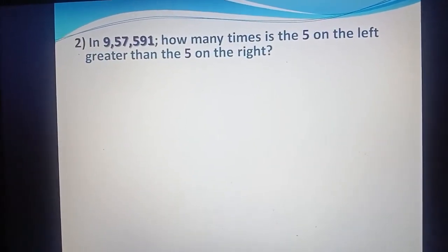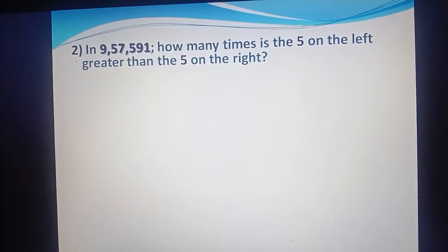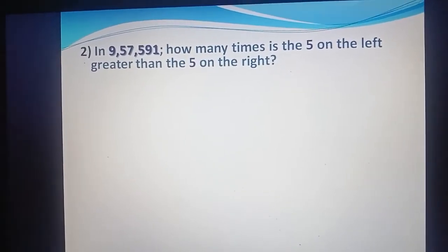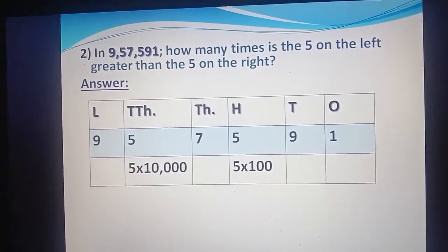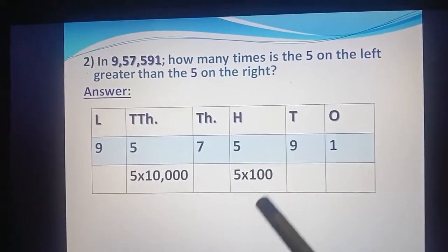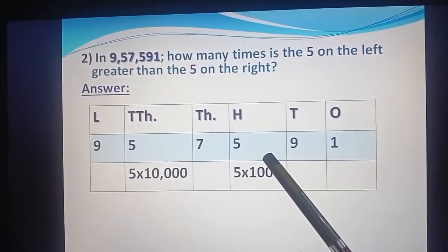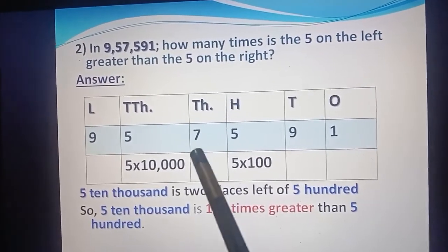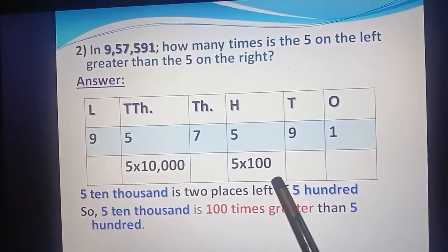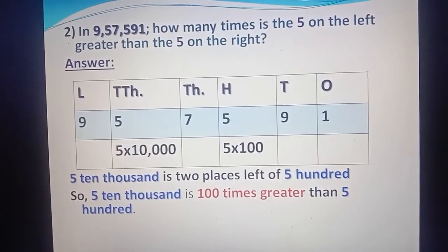Now come to question number 2. In 957,591, how many times is the 5 on the left greater than the 5 on the right? Answer: We write according to the Indian place value chart and see that the digit 5 on the left side is on the ten thousands place and digit 5 on the right side is on the hundreds place. So five ten-thousands is two places left of five hundred, meaning it is hundred times greater than five hundred.